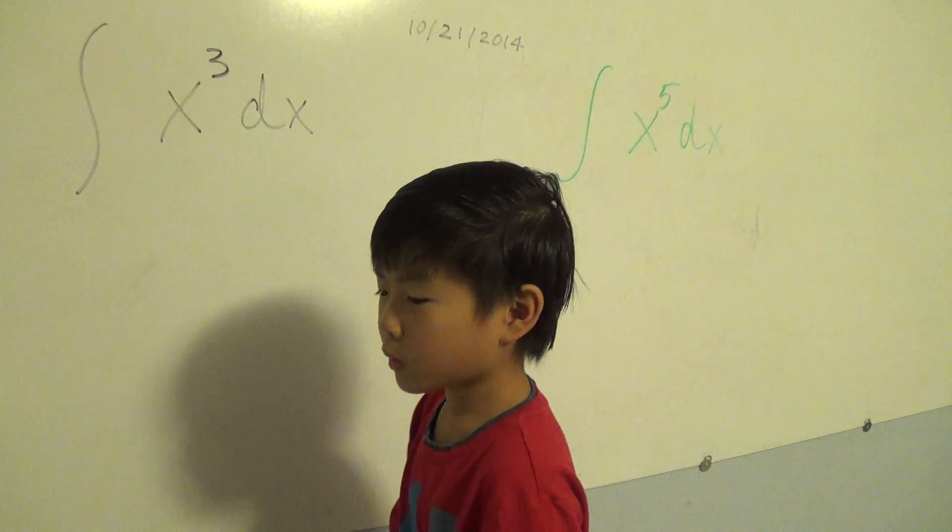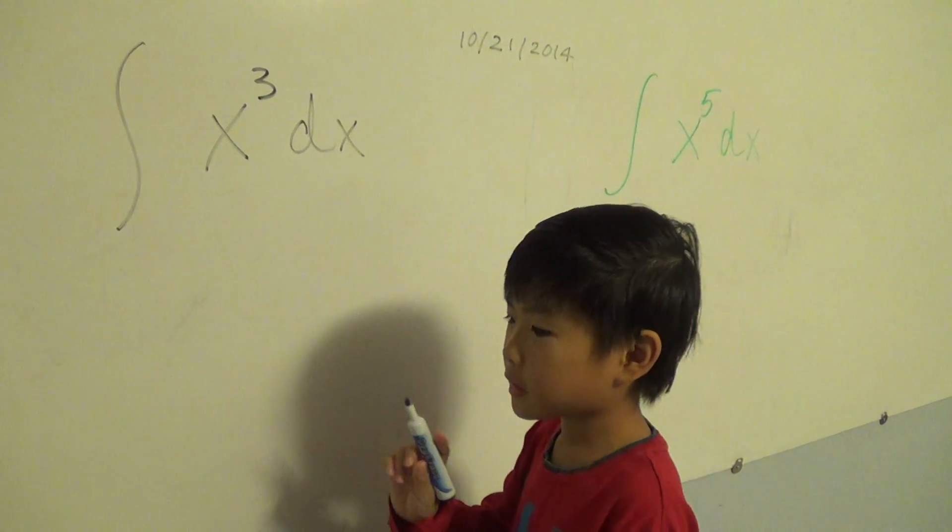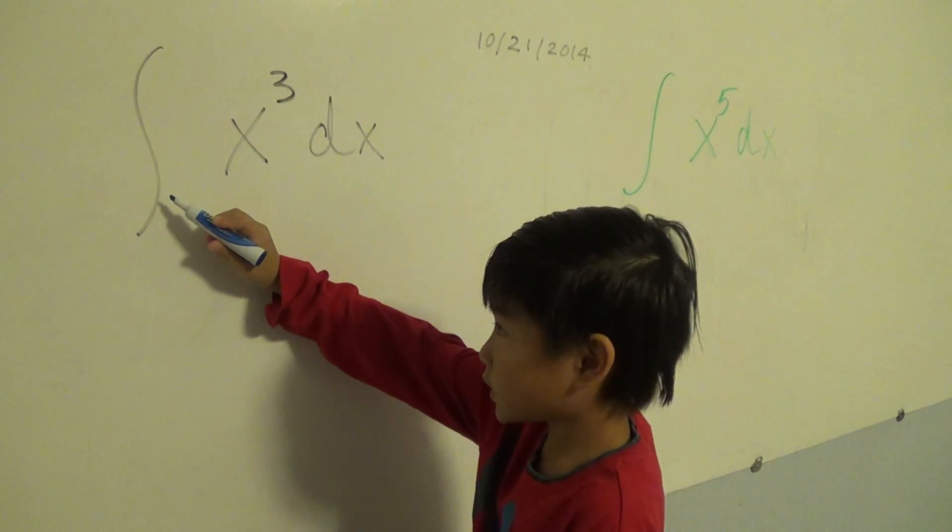First, I have one rule I call 'go up and upside down.' Now I'm going to show you why, but first I need to tell you something. This is an integral sign.